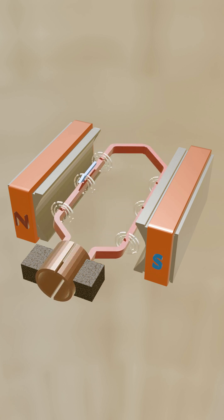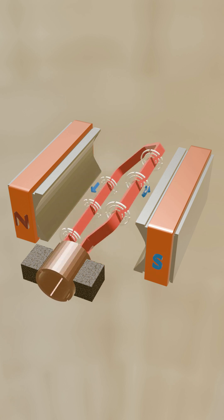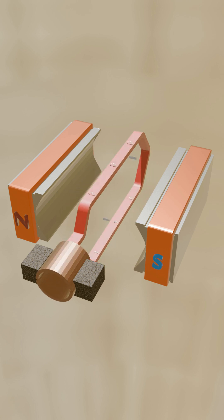As the conductor passes through the north pole field and enters the south pole field, the current in the coil must be reversed in order to maintain the rotation.